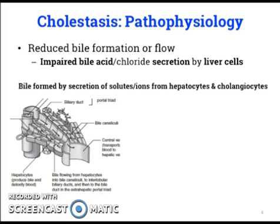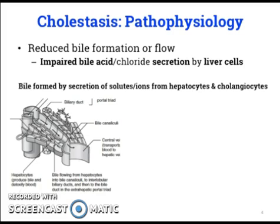In terms of the pathophysiology of cholestasis, it is a result of either reduced bile formation or flow, and that can arise due to a few different reasons, but first we have to quickly talk about how bile flows. Bile is formed due to the contributions of the hepatocytes and the cholangiocytes, the hepatocytes being the primary cells of the liver, and the cholangiocytes being the cells that line the bile ducts or the bile canaliculi, which you can see here. The bile canaliculi are channels that transport bile to small biliary ducts that travel towards the hilum or the centre of the liver. As they do, they drain into progressively larger ducts.